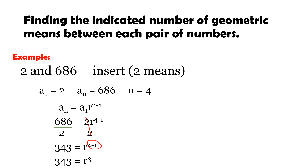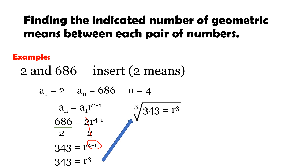So r³ = 343. To solve for r, we need to cancel the exponent 3 by taking the cube root of both sides. The cube root cancels the exponent, leaving just r. The cube root of 343 is 7, so r = 7.